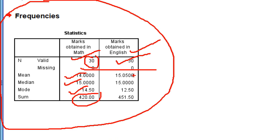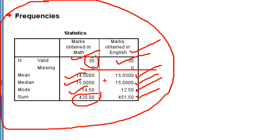For English, the mean is 15.05, the median is 15, the mode is 12.50, and the sum is 451. Comparing the two, the mean score of English is higher than the mean score of mathematics.